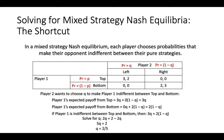We can work through the same process for player 2, who wants to choose q in order to make player 1 indifferent between top and bottom. We find that q equals 2 fifths, the same solution that we found using the player's best response functions. Thus, in just two steps, we have found the mixed strategy Nash Equilibrium of this game. Remember that for this method to work, each player must randomize between their pure strategies in such a way as to make the other player indifferent between their pure strategies.